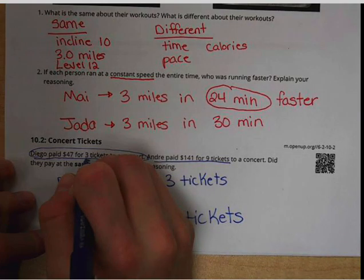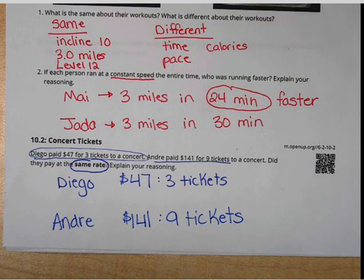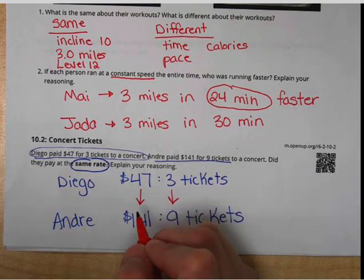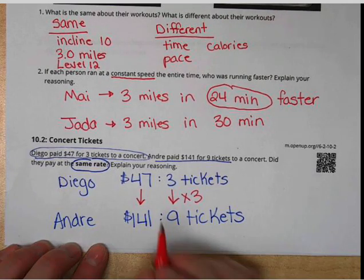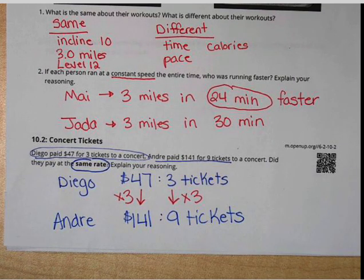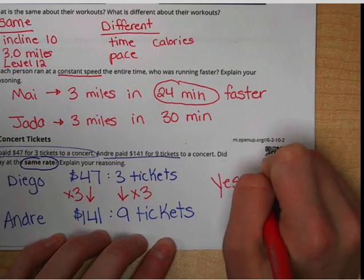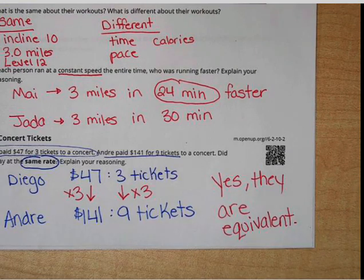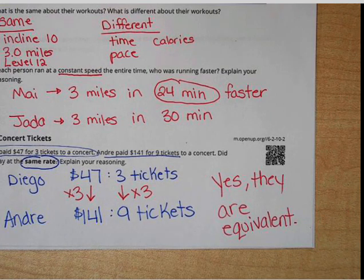The question wants to know: did they pay the same rate? So are they equivalent to each other? If we find our multiplier, $47 times 1 is $47, so it's more than that. Three times three is nine. And if we do $47 times 3, we would find that that was equal to $141. These have the same multiplier, so yes, they are equivalent. We know they're equivalent because they have the same multiplier on both sides, so they cost the same amount. So Diego and Andre both paid the same price.